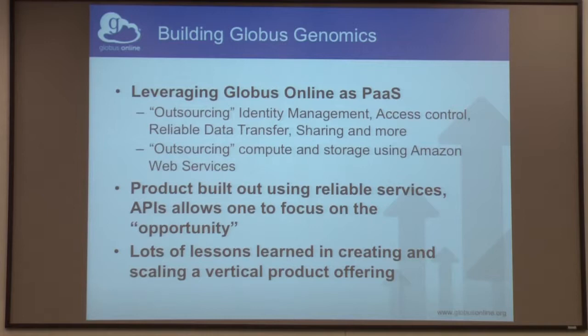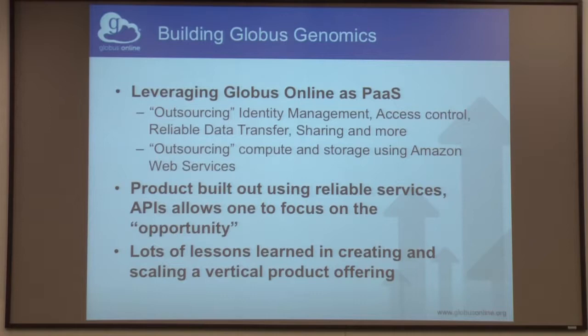Globus Online enjoyed great reliability — we had three nines of uptime of the service itself, and Amazon has been pretty reliable for what we're doing. Using these capabilities, we were able to take for granted that yes, we can do identity management and access control — let's focus on what we're trying to offer. We were able to leverage Globus Online as a platform and build on top of it to provide these interesting capabilities. In the process of building Globus Genomics, we learned a lot about how to scale analysis, how to run things, how to do identity management, how to integrate and increase the value we provide to researchers.